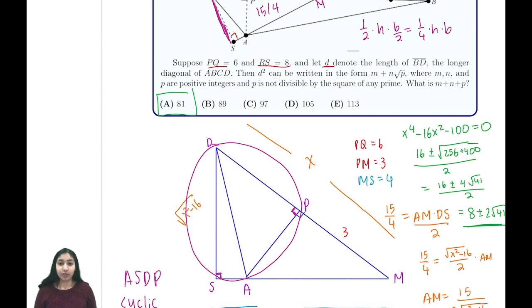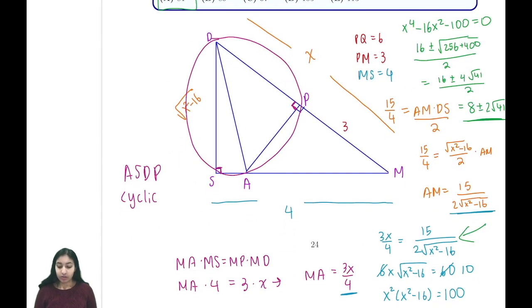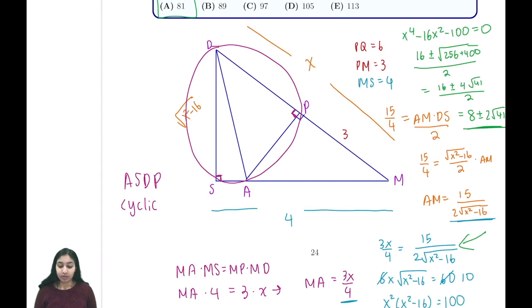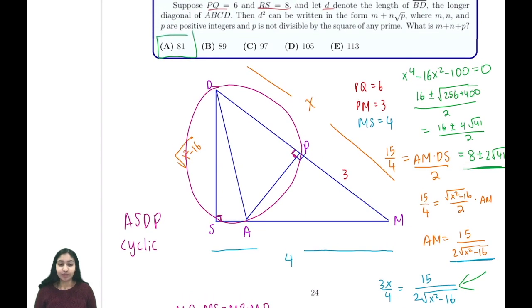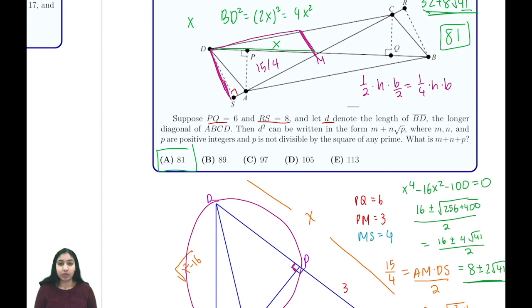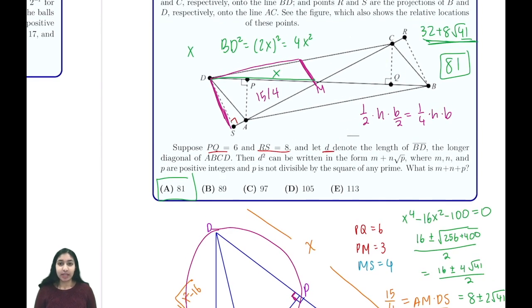We found the area in two different ways using x, then we set them equal and solved for x to find our length. We just multiplied by 4 to find BD squared, and we got our answer of 32 plus 8 square root 41, giving us a final answer of 81.